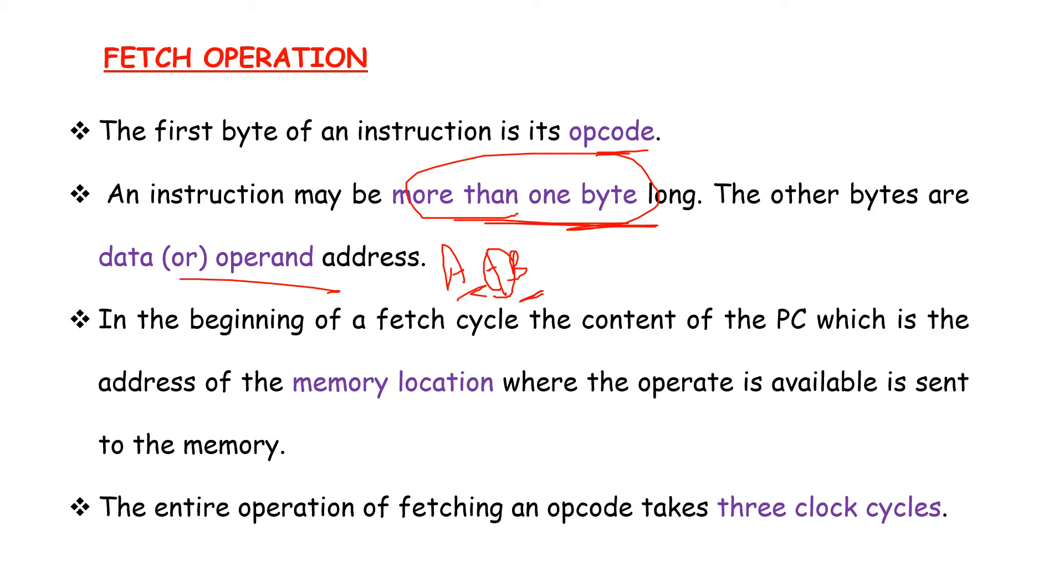In the beginning of a fetch cycle, fetch cycle is the basic operation cycle of a computer. The content of the PC, which is the address of the memory location where the operator is available, is sent to the memory.